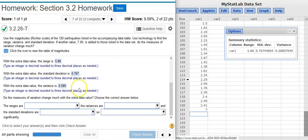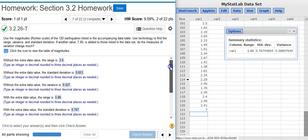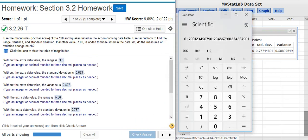Good job! Now, the last part of this problem asks, do the measures of variation change much with the extra data value? If I look at these drop-down boxes for the blanks that I'm supposed to fill in, notice how we're using five percentage points as the boundary between what's statistically significant and what's not. So to determine whether the statistics that I've calculated up here fall into that, I'm just going to pull up my calculator.